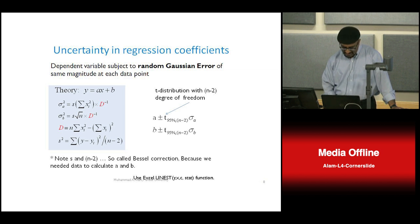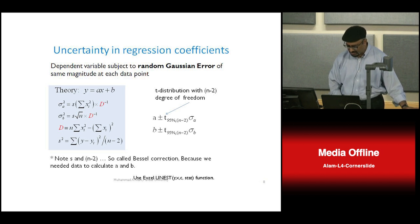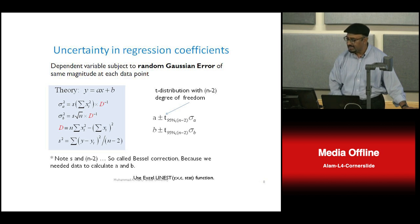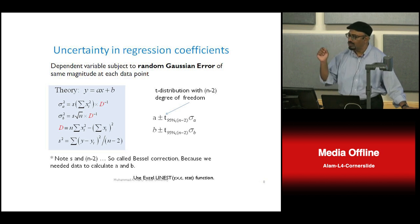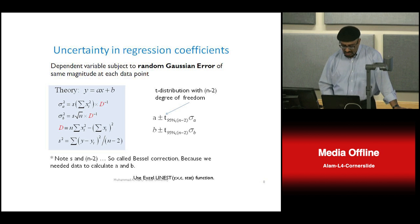By the way, in Excel there is a LINEST array function where you choose the column for x and the column for y, choose whether to have a constant, and all the statistics — the coefficients a and b, error rates, and everything — will come out in one second. In the homework I have already posted, you will practice this and see how it works out.